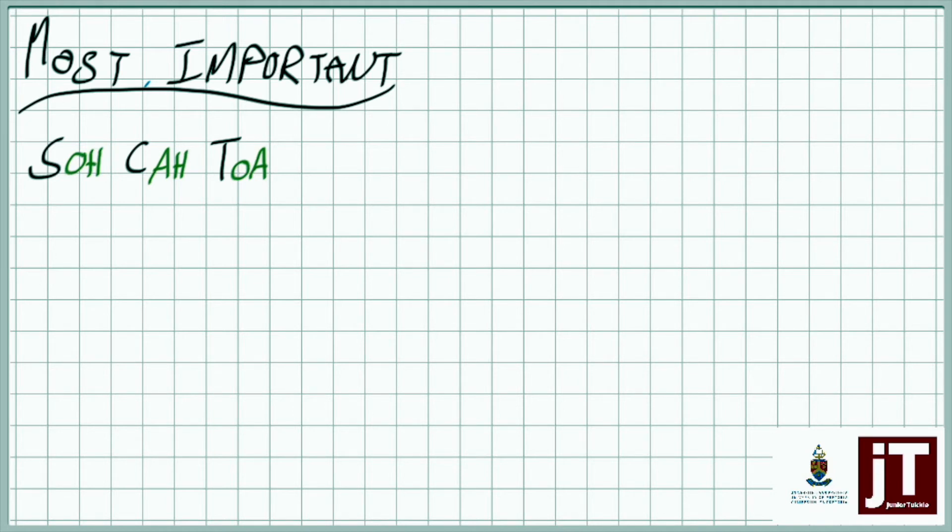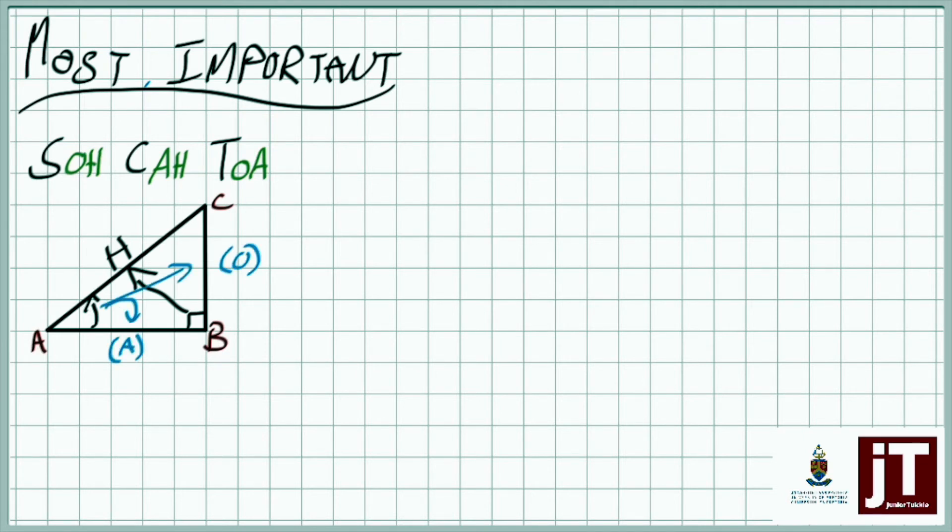So without talking too much further, let's look at an example. Say I've got a triangle ABC. If I look from angle A, first of all I'm going to label the sides. So there's my hypotenuse. Next to that A is going to be my adjacent and then there's going to be my opposite, the vertical side.